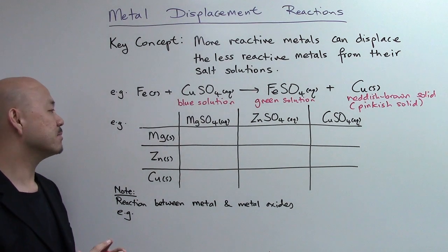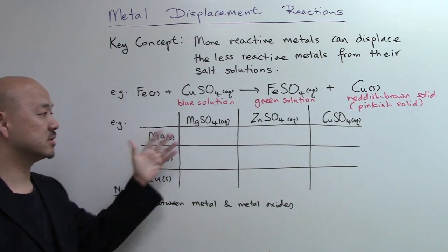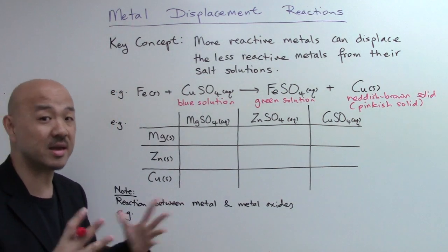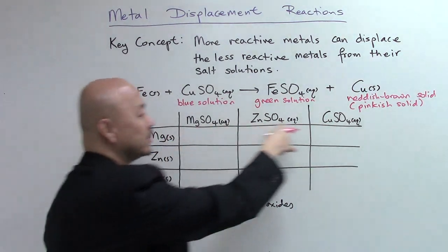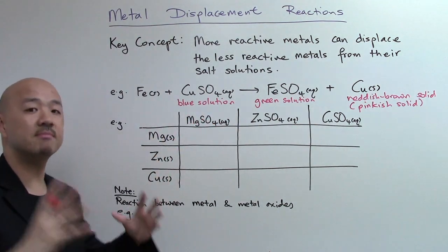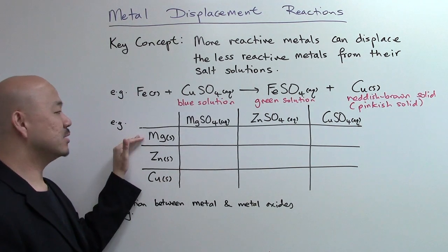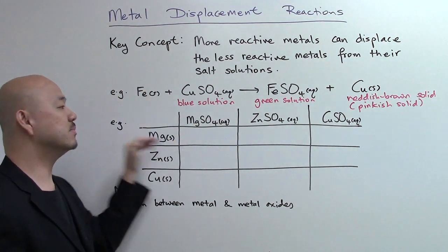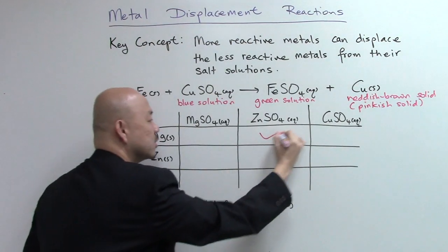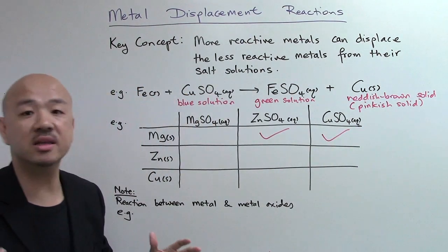In the exam, you will frequently be asked about a table like this: when you add a series of metals into a series of salt solutions, whether there is a displacement reaction at all. Three metals and three salt solutions. Magnesium with magnesium sulfate — because it's the same metal, there will be no displacement. But when you add magnesium into zinc sulfate, magnesium being more reactive than zinc will displace zinc out and become magnesium sulfate and zinc metal. Same thing for magnesium with copper(II) sulfate, because magnesium is more reactive than copper.